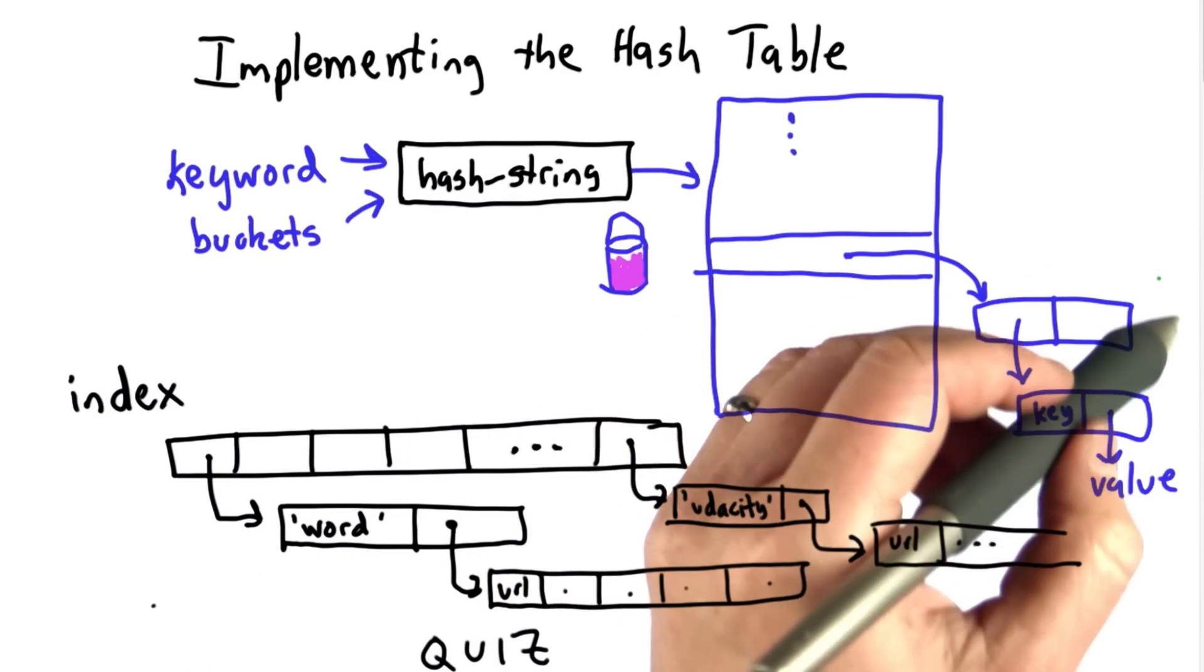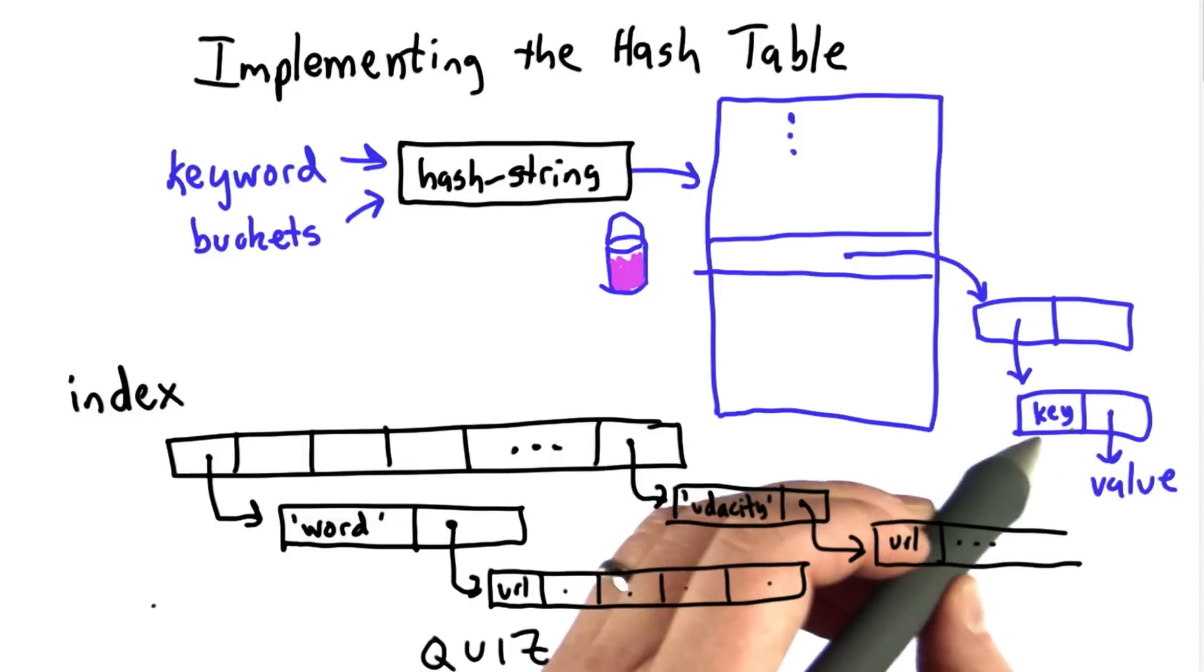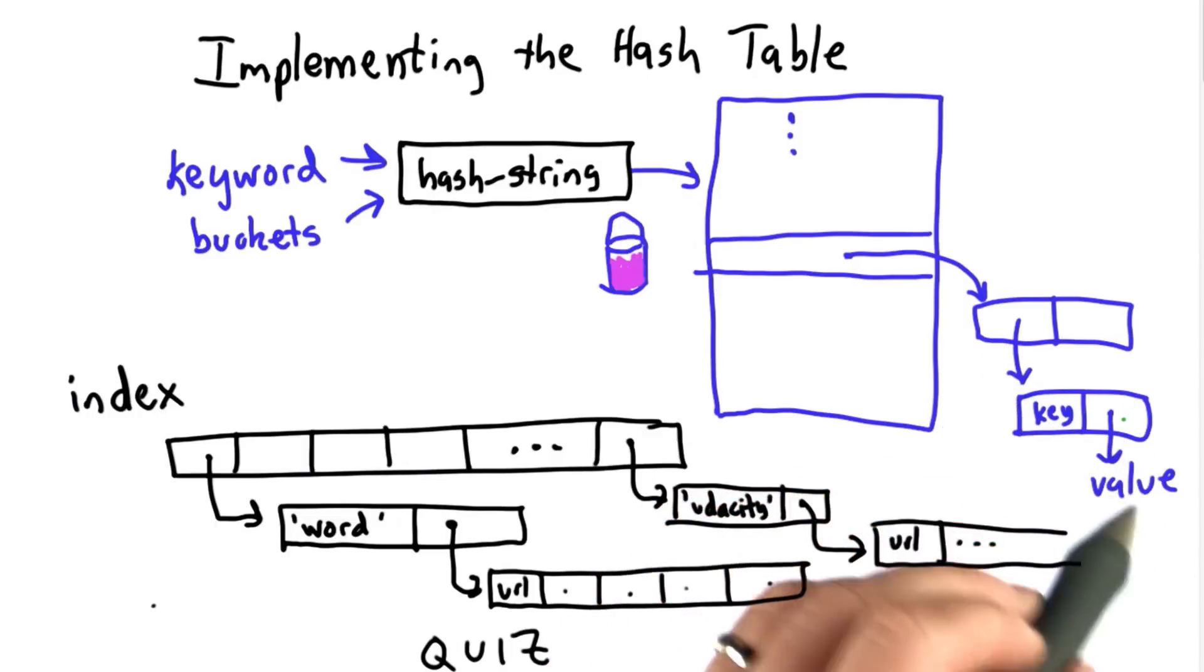This is going to be the list where each element in the list is a bucket. And what a bucket is, is a list itself, where each element in that list is a key and a value. In our case, the key is the word, the value is the list of URLs.